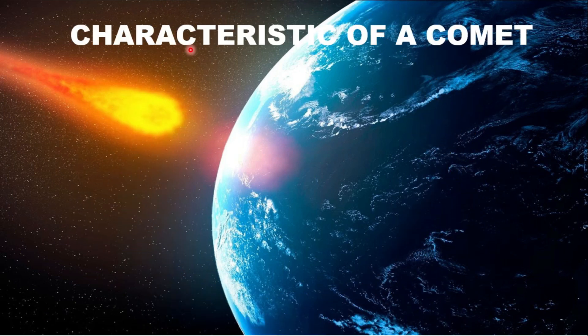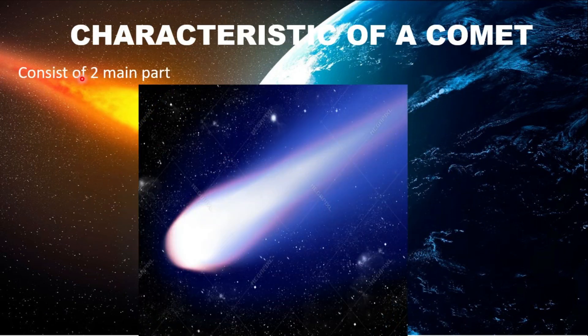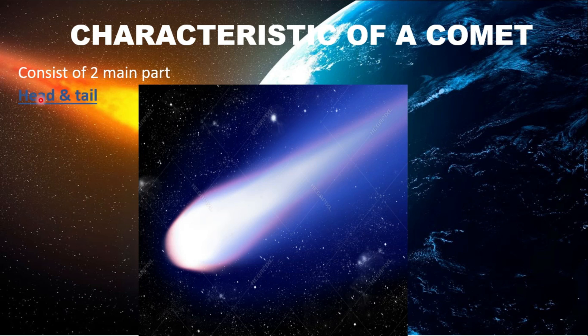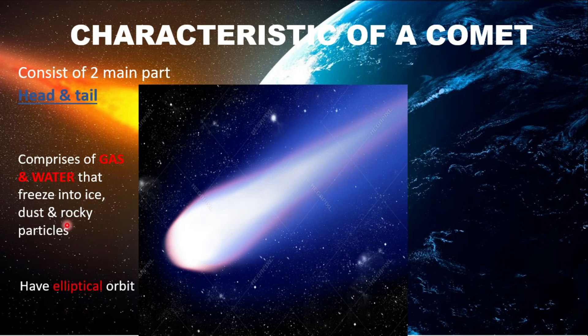What is characteristic of a comet? It consists of two main parts, head and tail, comprises of gas and water that freeze into ice, dust, and rocky particles.